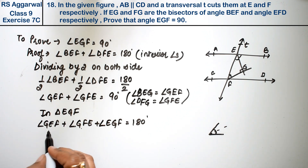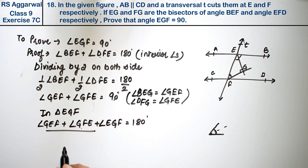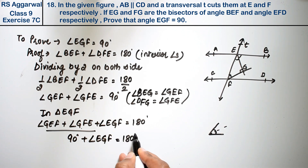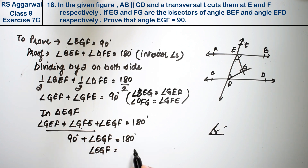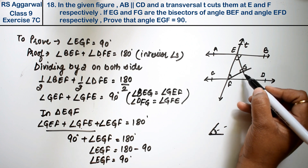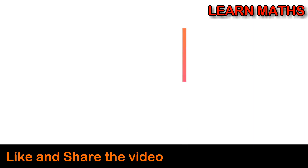Substituting, 90 degrees plus angle EGF equals 180 degrees. Therefore, angle EGF equals 180 minus 90, which gives angle EGF equal to 90 degrees. Hence proved.